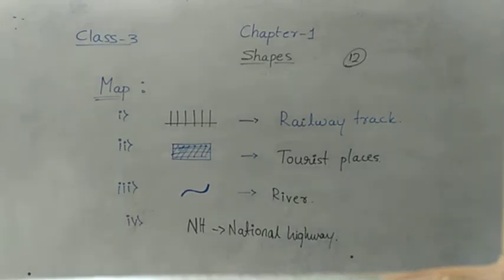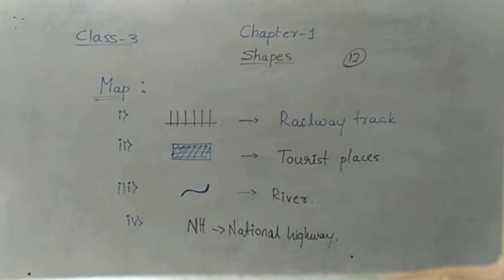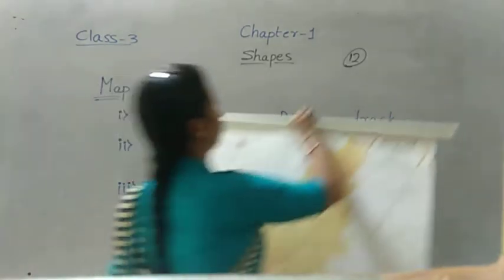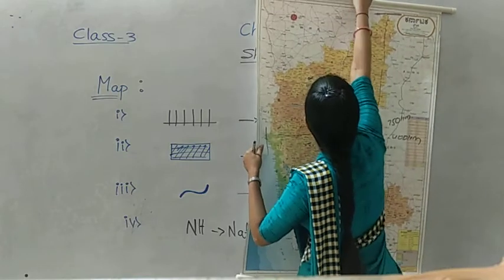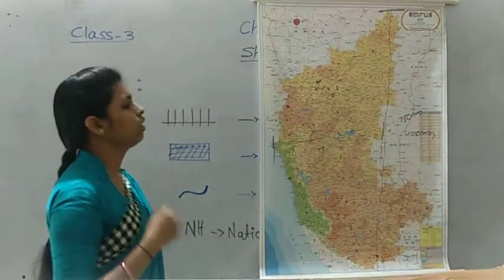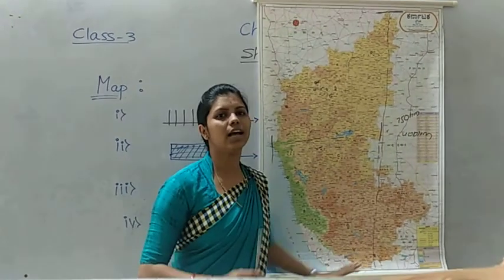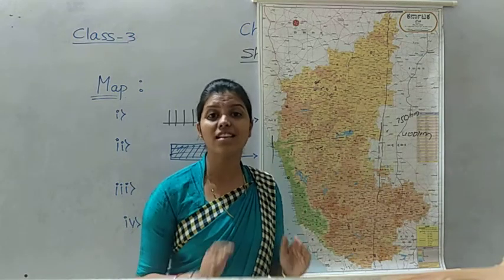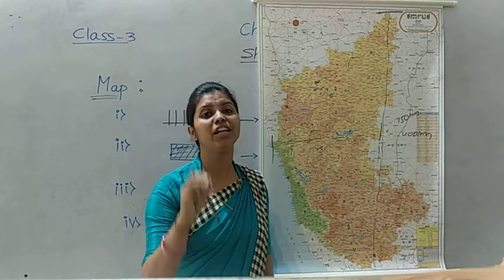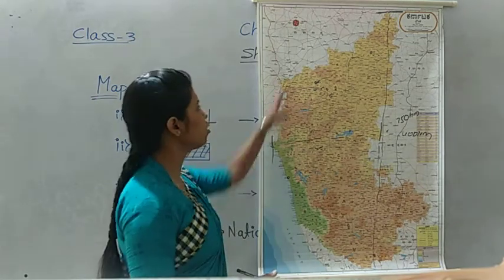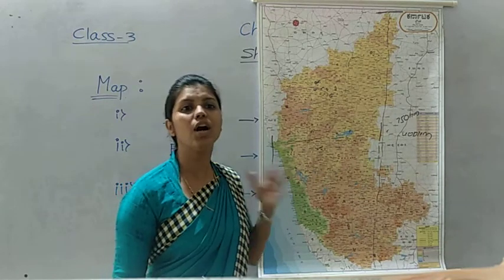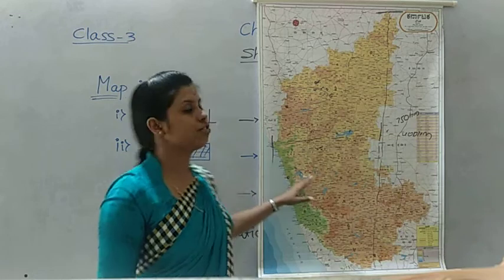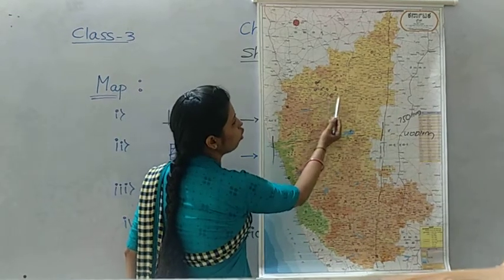Now we will see the diagram - that is a map. I will show the map to you. See all of you here. So this is the Karnataka map. What is this? Karnataka map. Here so many things are there to learn. This is our state Karnataka. Here Bagalcoat is there.